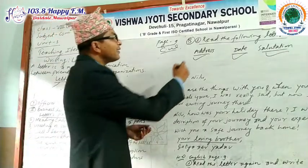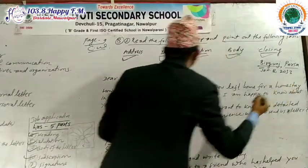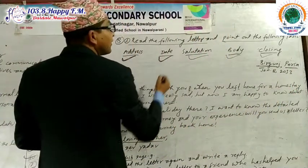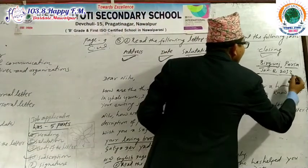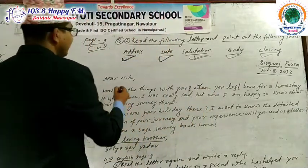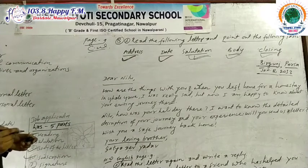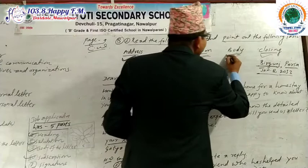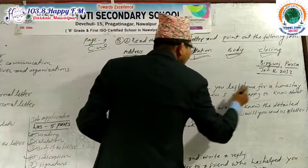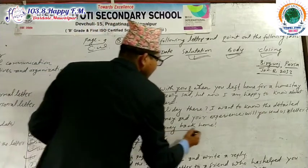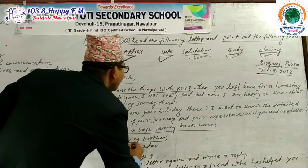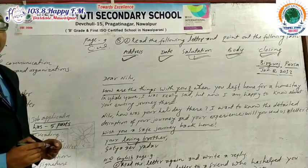Now let's do the class exercise. What is the address here? The address is Brigands. What is the date? The date is January 8th, 2013. What is the salutation? The salutation is 'Dear Nilu.' What is the body? The body starts with 'How are the things with you' and continues until the closing.